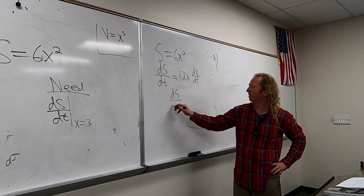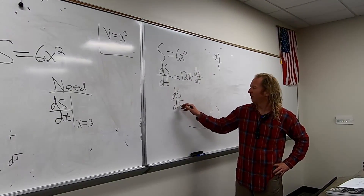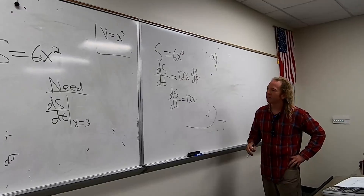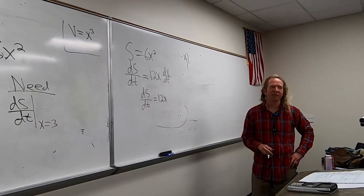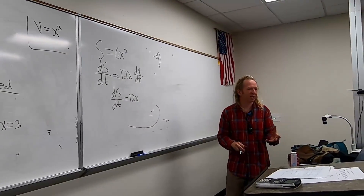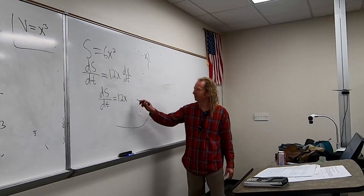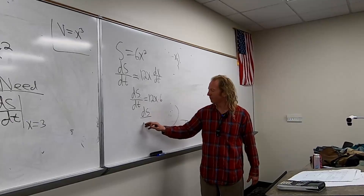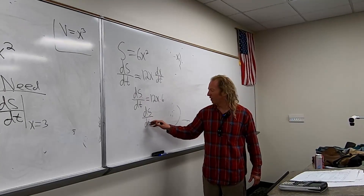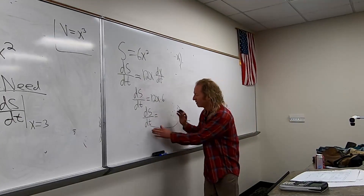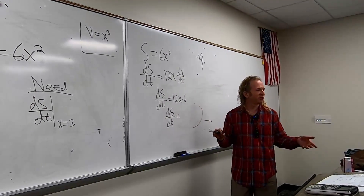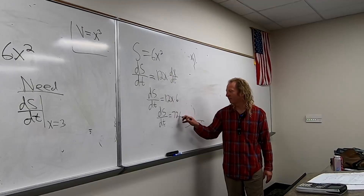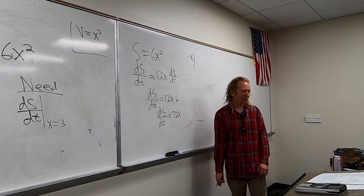So dS/dt equals 12X times dX/dt, which is six. So this is going to be dS/dt equals 72X.